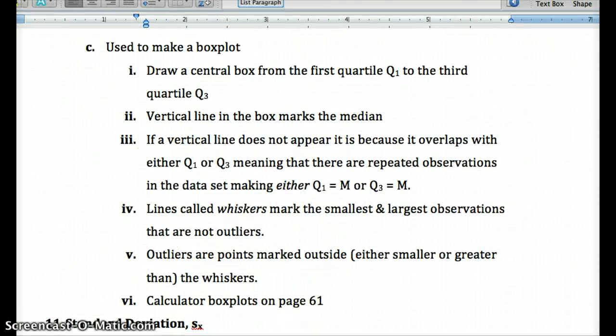So in order to make that box plot, you would figure out the quartiles. You'd have a central box from Q1 to Q3 with a vertical line somewhere in it marking the median. If there is no vertical line there, it's because the median equals Q1 or Q3.